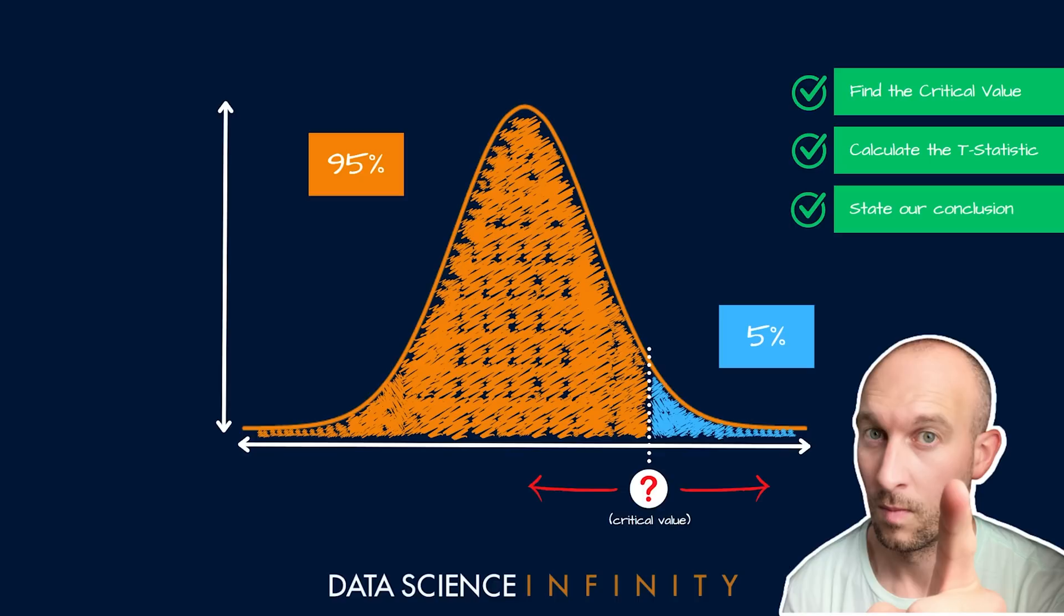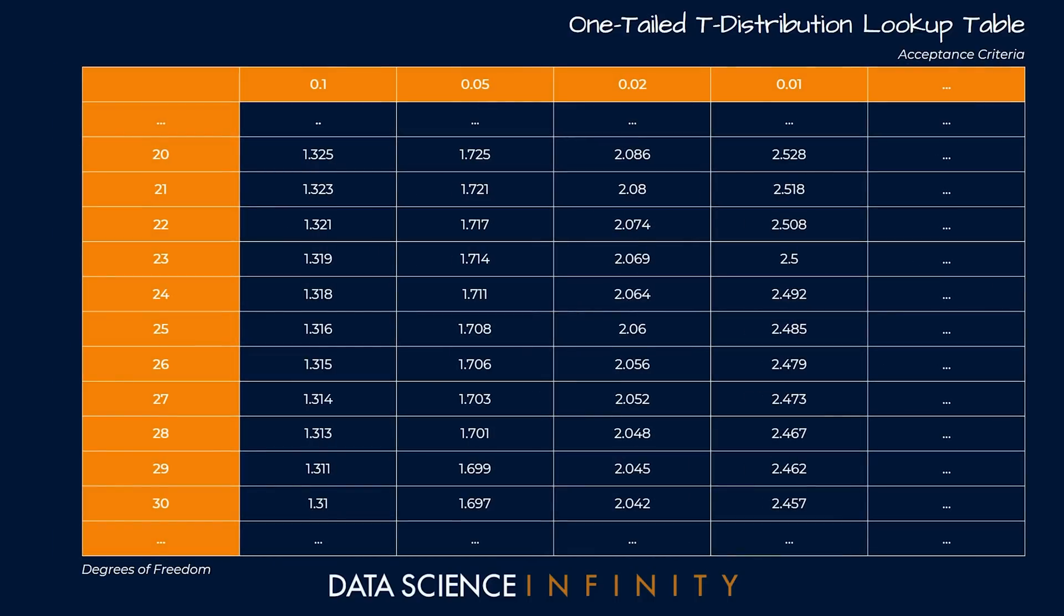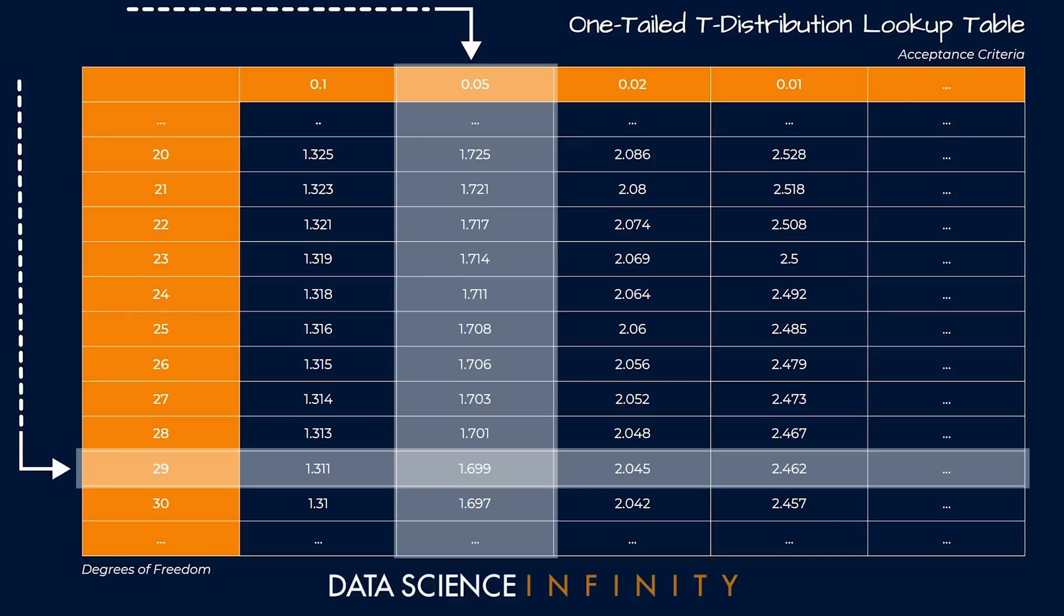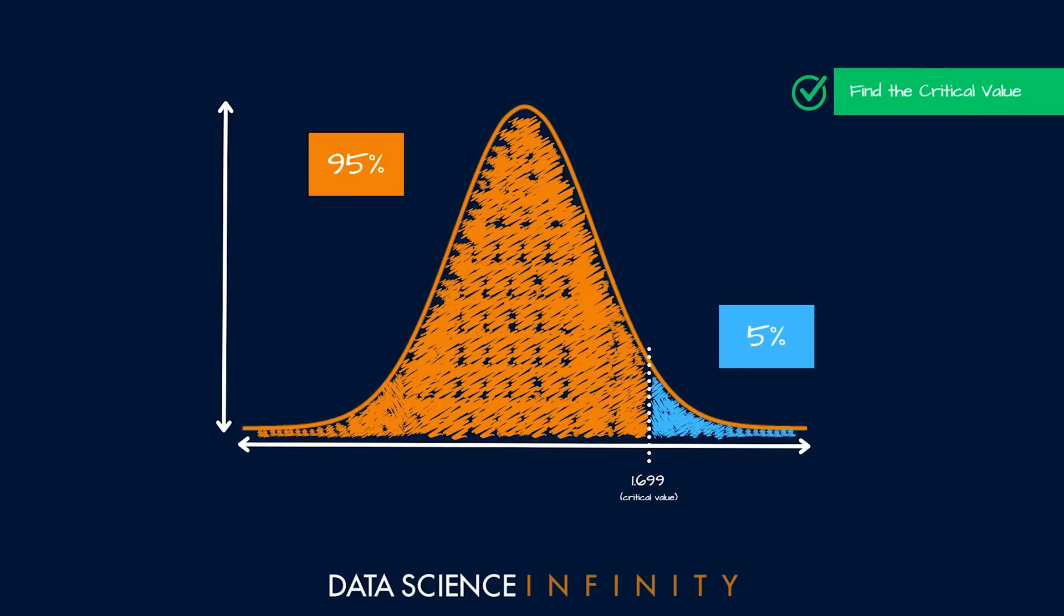Let's start with step one and find our critical value. We can get this from our one tailed t-test lookup table. We need to find the value that exists at the crossroads of our degrees of freedom value, which in a paired t-test is the sample size minus one, or here the number of players in our squad minus one, so 29, and our acceptance criteria value which we set to 0.05. At this junction we get the critical value of 1.699. Well done, that is the first part of our three step process.